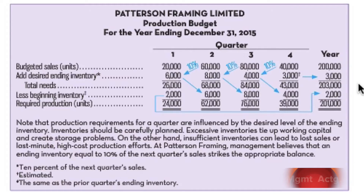Now we're looking at the production budget. A few things to point out: the first line is budgeted sales - we've already done that in the sales budget. Once we figure out how many units we're going to sell each quarter, we need to meet that demand. We start with budgeted sales, and the second line is our desired ending inventory - what we want to end the quarter with as far as inventory.